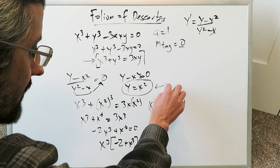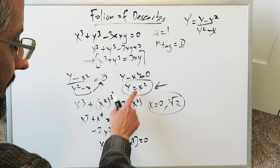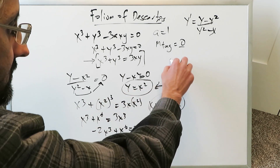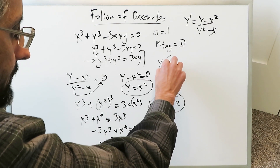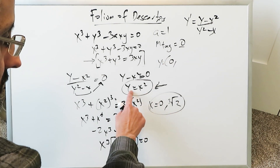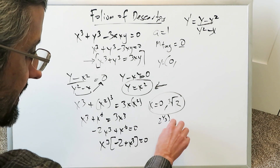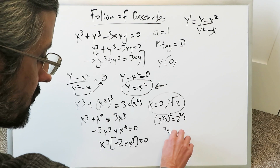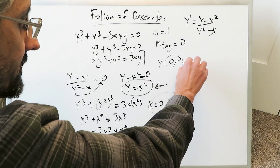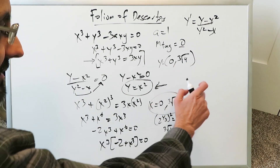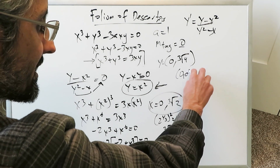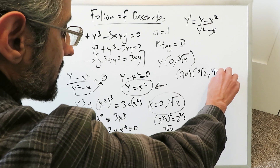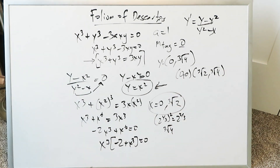These x values can be plugged back into y equals x squared. If x equals 0, then y equals 0. If x equals the cube root of 2, then y equals (cube root of 2) squared, which is 2 to the 2/3, or the cube root of 4. So the two coordinate pairs are (0, 0) and (cube root of 2, cube root of 4).